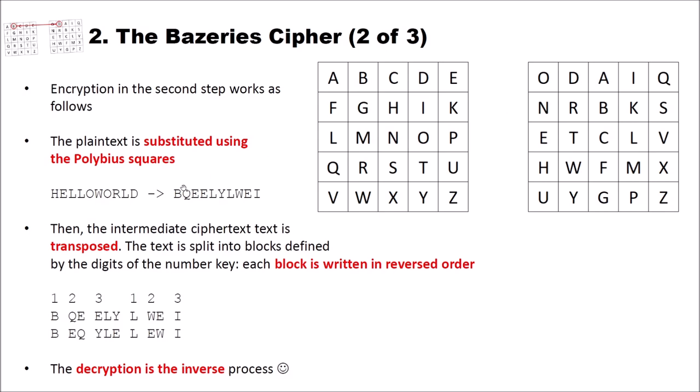For the L and the L here, we have a look. L becomes E. So we have the E here. Then, after encrypting the plain text to the intermediate cipher text, the intermediate cipher text is transposed. To do so, the text is split into blocks defined by the digits of the number key. And each block is written in reversed order. How does this work? First, you split your intermediate cipher text into these blocks.